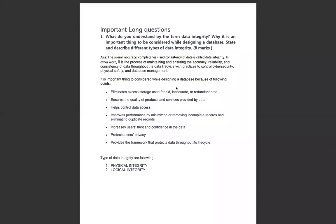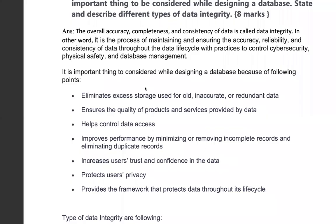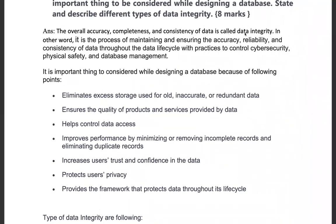This is one of the important questions in database management systems. The question is about data integrity. While designing a database, what is data integrity? The overall completeness and consistency of data is data integrity. In other words, it is the process of maintaining and ensuring the accuracy, reliability, and consistency of data throughout the data's lifecycle, with the practice to control cybersecurity, physical safety, and data management.